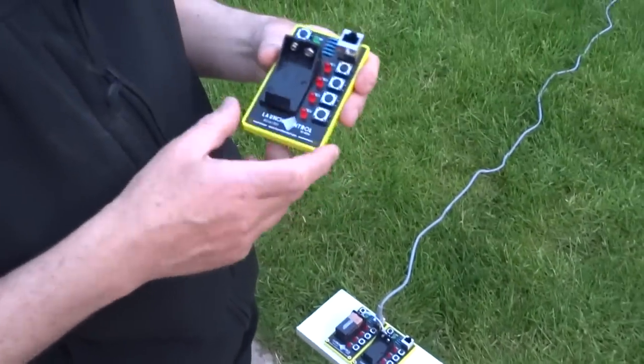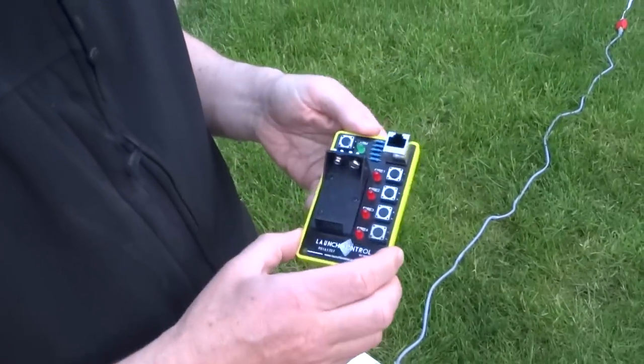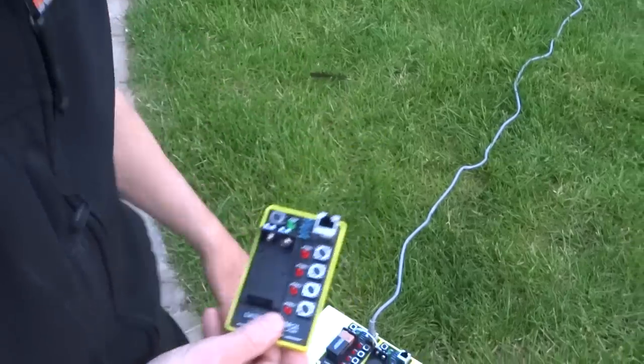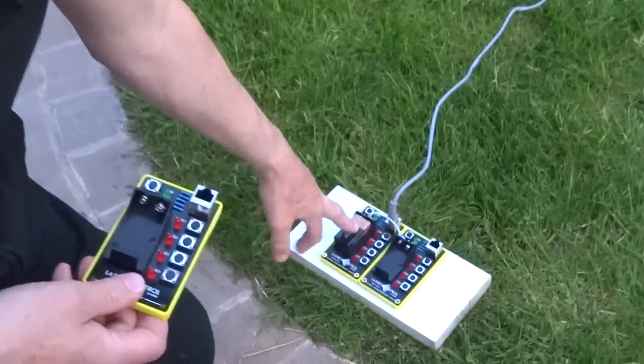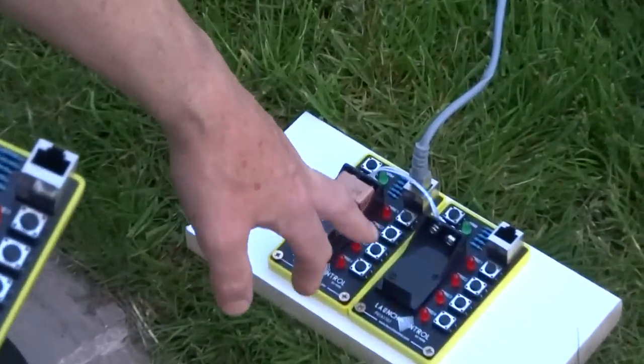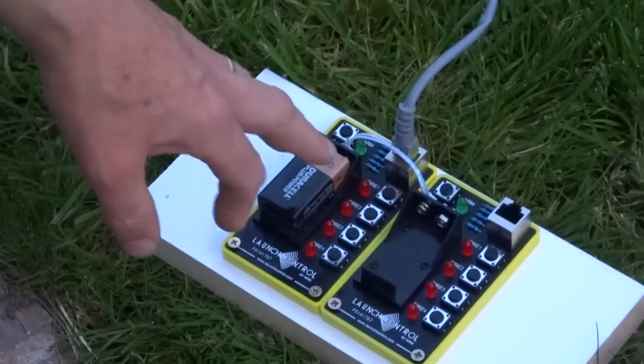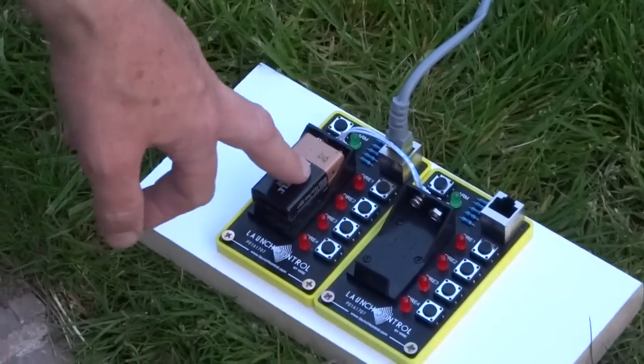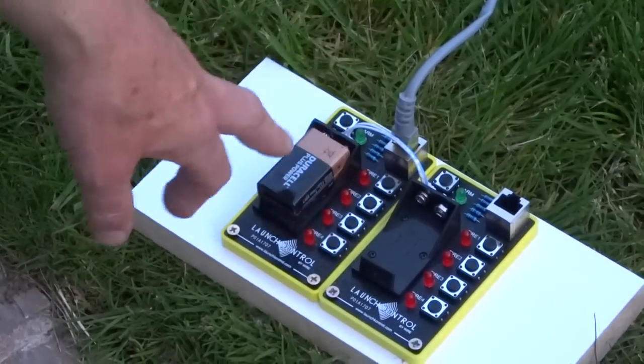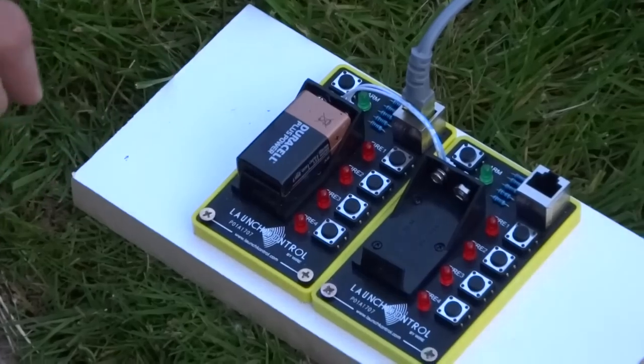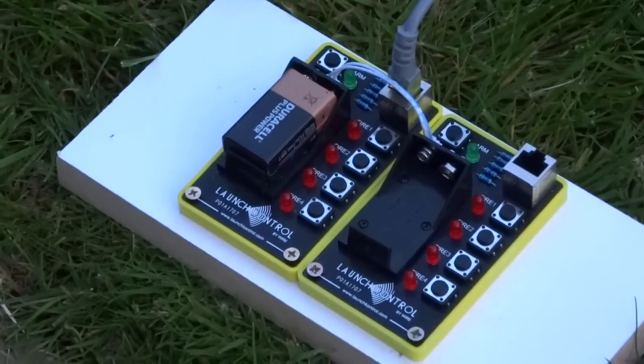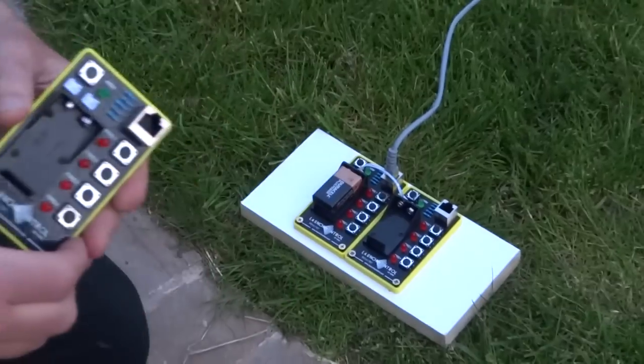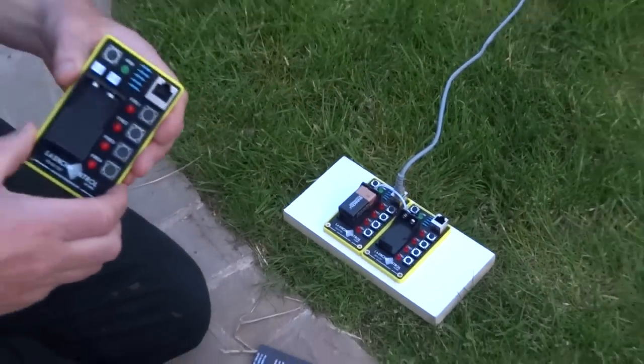Now there are two things that you don't get with the launch control system that you do need to purchase separately. The first is a battery, and you need a nine volt alkaline battery. If you're running more than one board you don't need more than one battery. As you can see we've got two boards here but only one battery powering them. The suggestion is that you put in a battery every few boards just to boost the power.